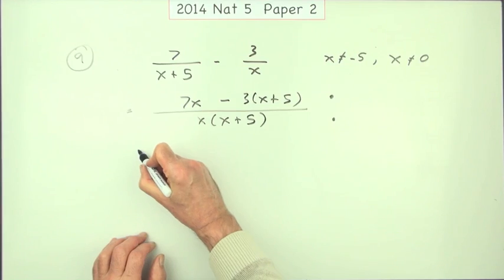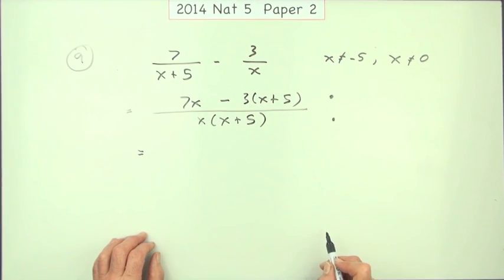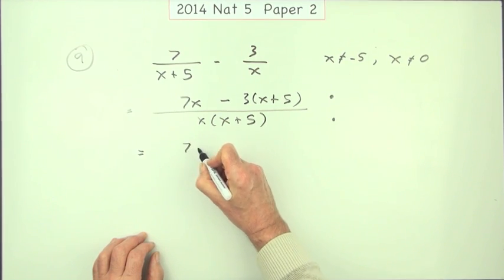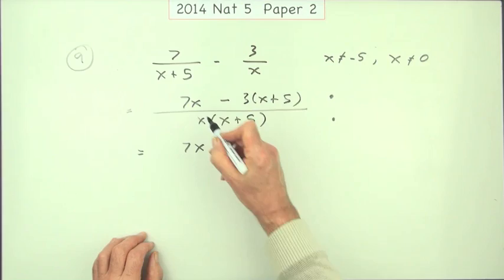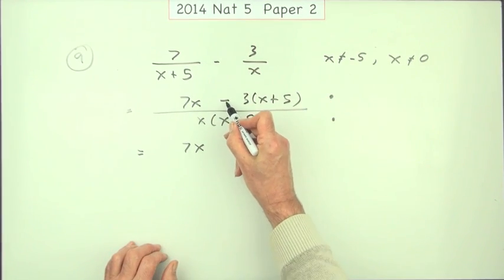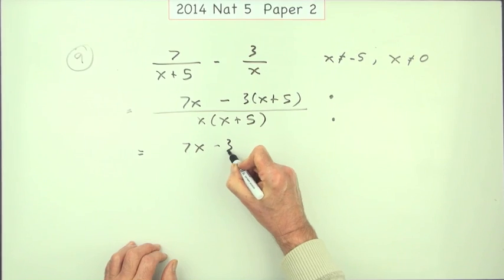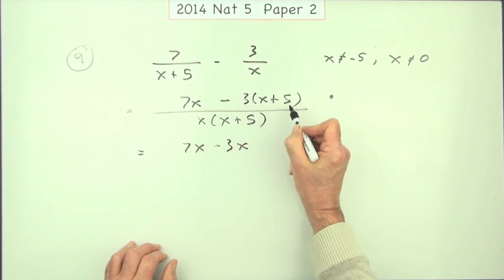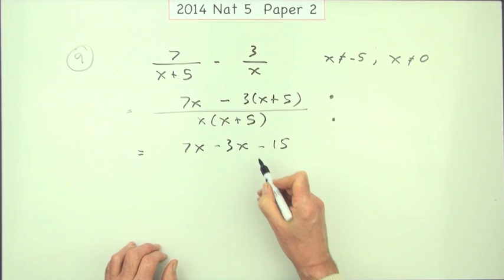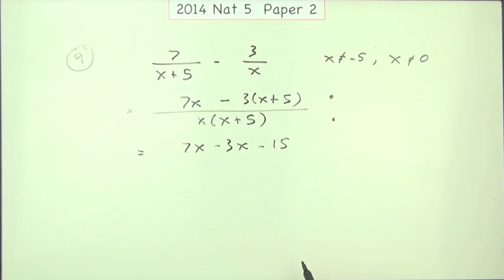And the third mark will be for just tidying that up. So you could do it all in your head, or you could spell it out. So I've got the 7x, which won't change, but I've got minus 3 times x, so that's minus 3x, and minus 3 times 5, so that's minus 15. You could have made a mistake there with that plus for instance.